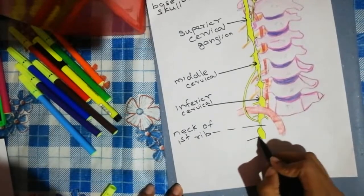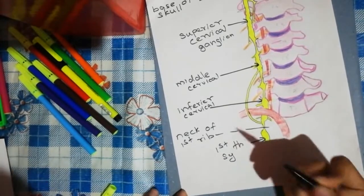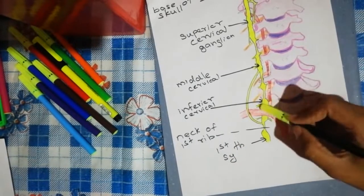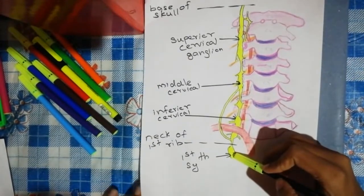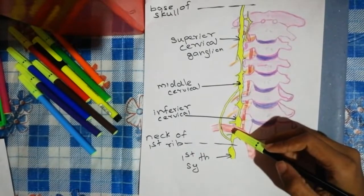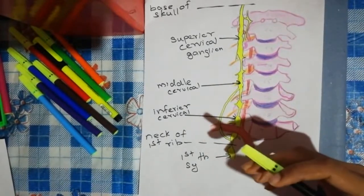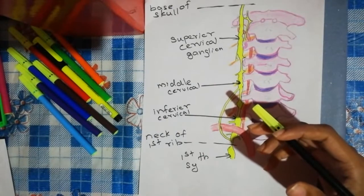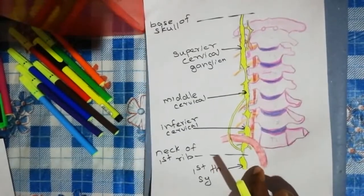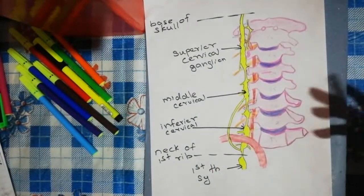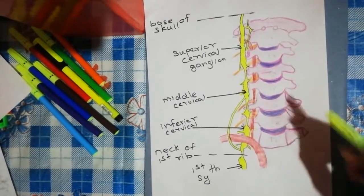Below the neck is the thorax, containing the first thoracic sympathetic ganglion. Often the inferior cervical ganglion and the first thoracic sympathetic ganglion are fused, and when fused it is called the cervicothoracic ganglion, or stellate ganglion. Now let's look at the relationships of the cervical sympathetic trunk.